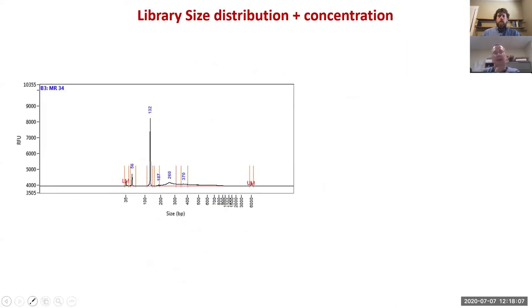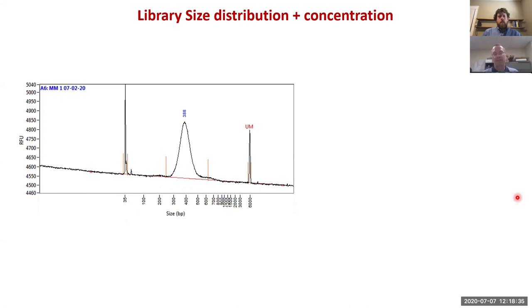Before we do the sequencing there's a quality control step and that's actually really important. This is an example of a library which was submitted. This is actually a sample which wasn't very good because there's significant contamination with the adapter still left which is really not very good. There's a pretty broad distribution of the sample which can also be problematic. What we aim for is a nice clean library where there's no adapter contamination and a fairly narrow size distribution of the library.